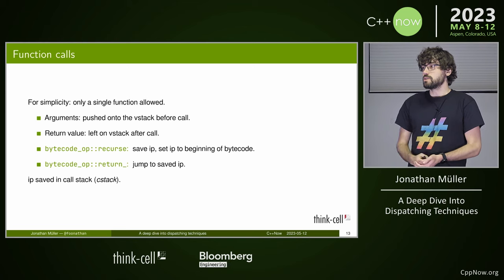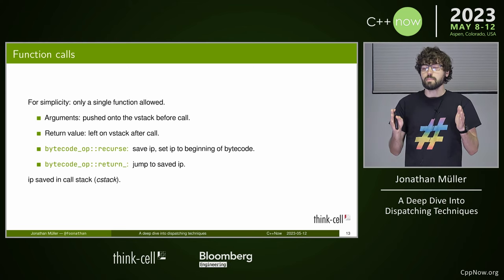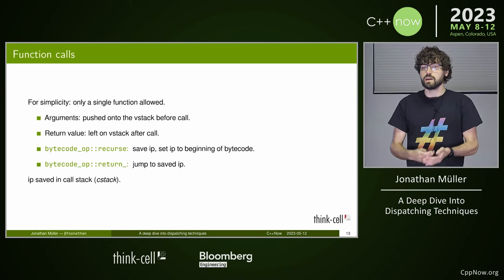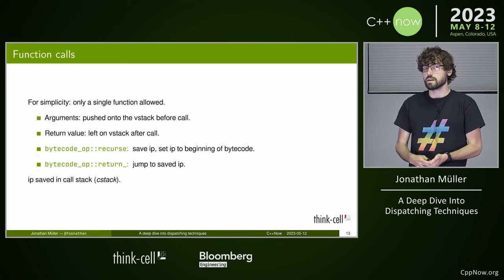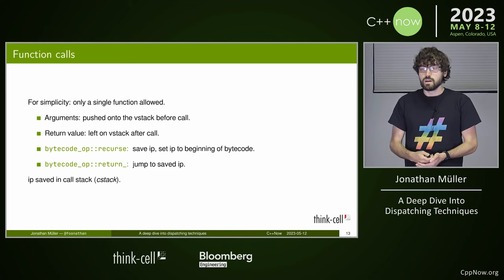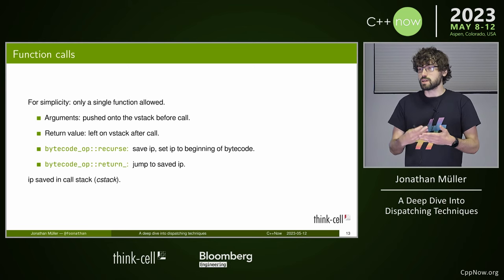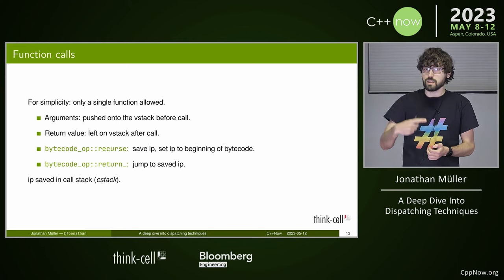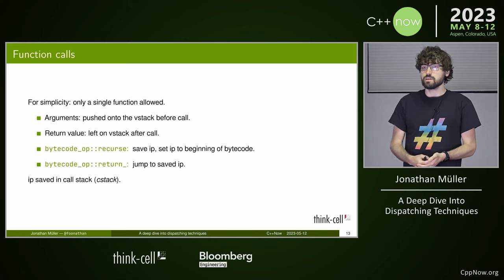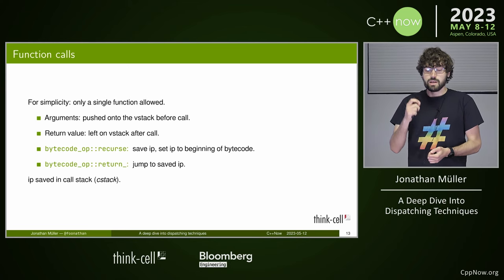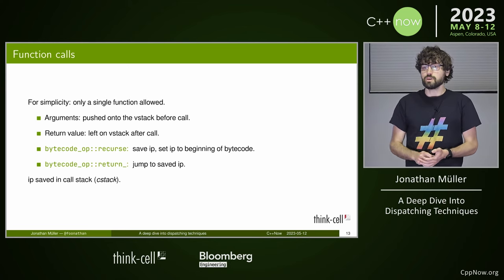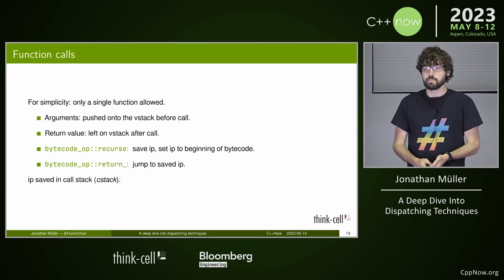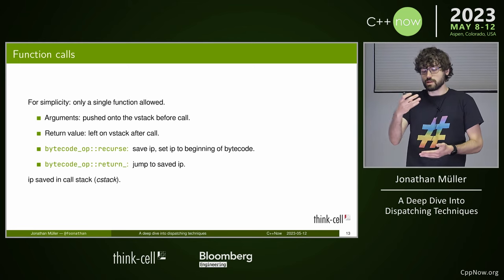For function calls, for simplicity we only allow a single function, so our entire bytecode program is essentially that function. Its arguments are pushed onto the VStack before the call, and when the function finishes it leaves a single return value on top of the VStack. Instead of call, we have recurse — it saves the instruction pointer and goes back to the beginning to execute again on a different call frame. Return jumps to the last saved instruction pointer, stored on a separate call stack.